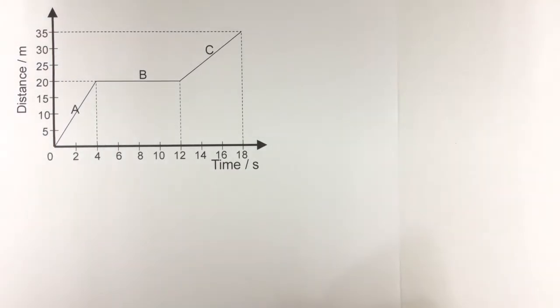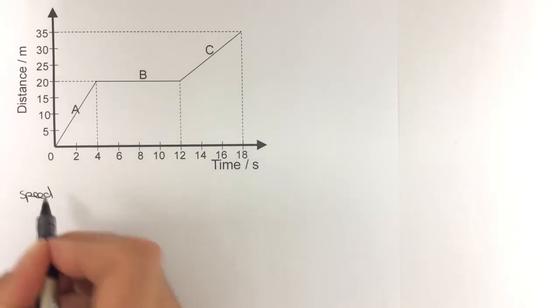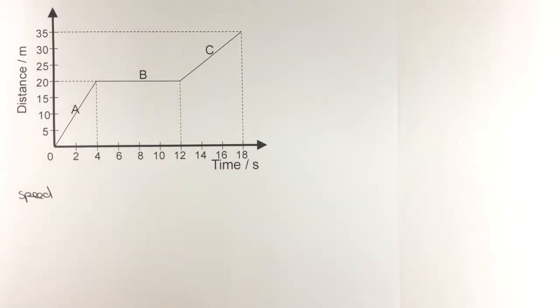In this video I'm going to look at how you can find speed from a distance-time graph. To find speed from a distance-time graph, you basically have to find the gradient of the graph.